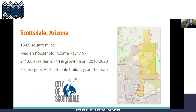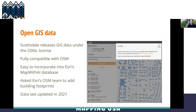The goal for this project was to get every single missing building on the map. The way I did that was by going to the Scottsdale OpenGIS data website. Luckily, Scottsdale releases all of their GIS data under the ODbL license, which is fully compatible with OSM.